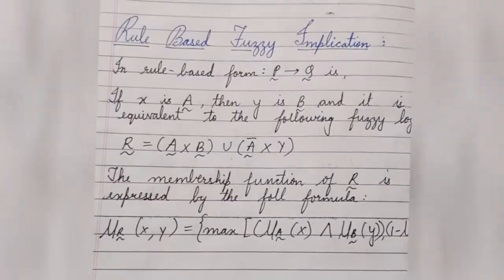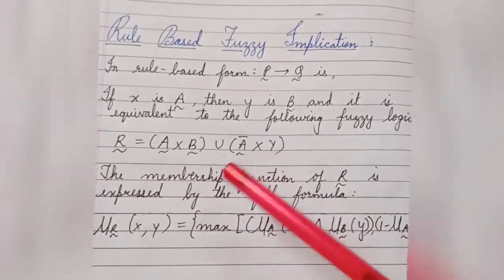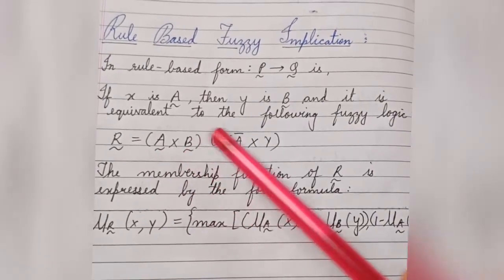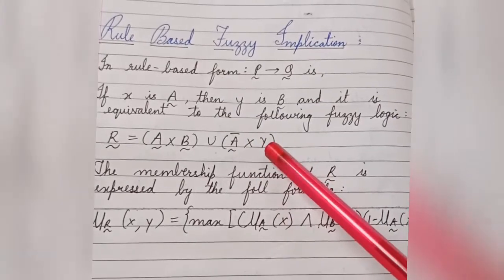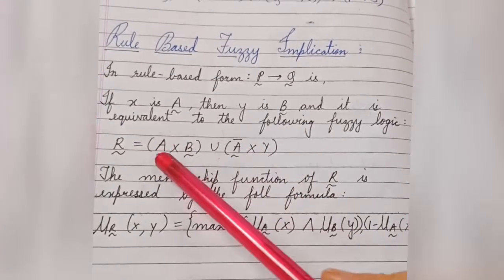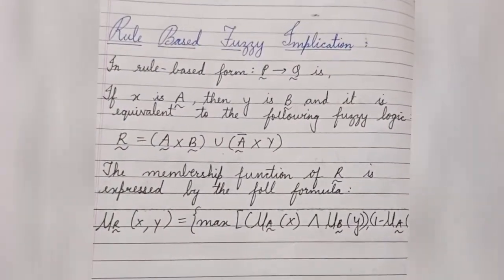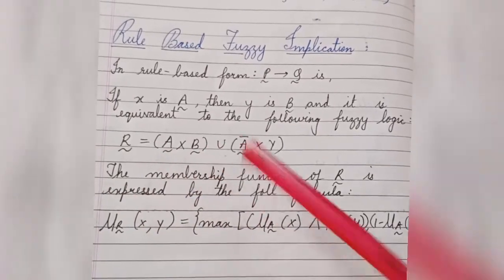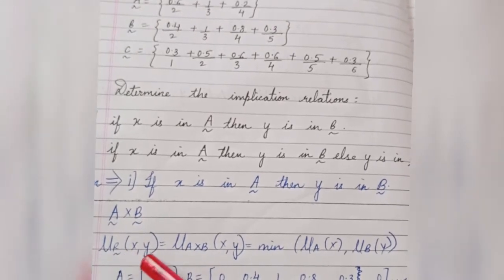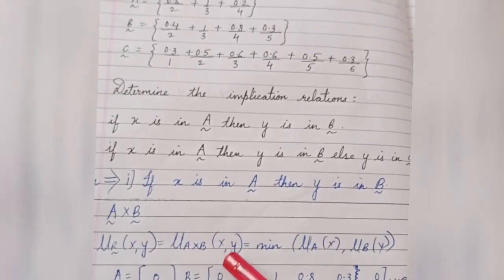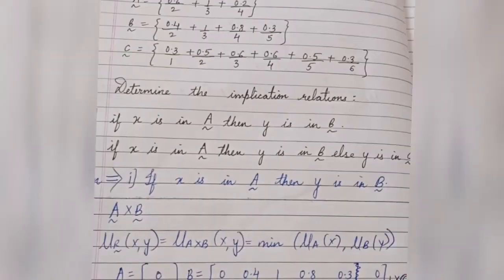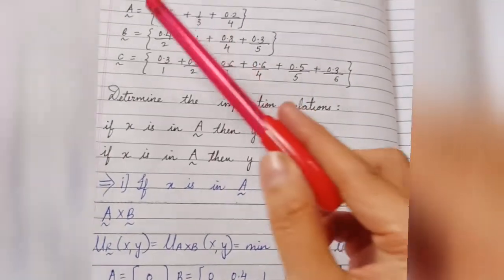For the first rule — if X is in A then Y is in B — we solve in two parts: first A Cartesian B, then A-complement Cartesian Y, and finally the union of both. A Cartesian B is given by mu_R(x, y) = mu_{A×B}(x, y) = min(mu_A(x), mu_B(y)).